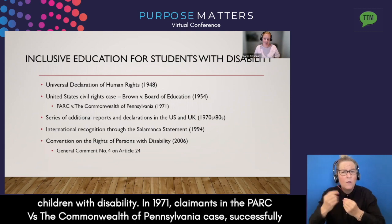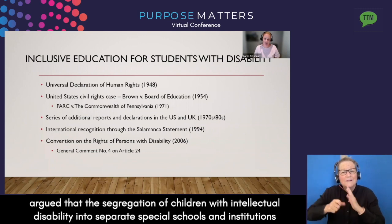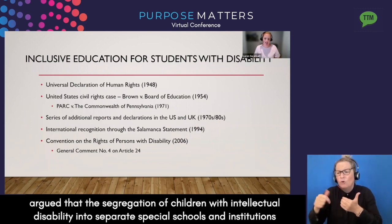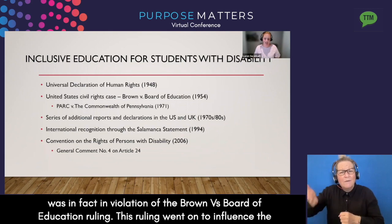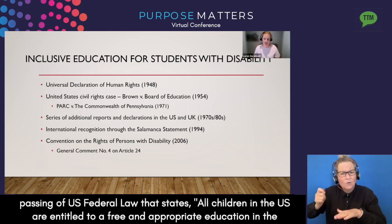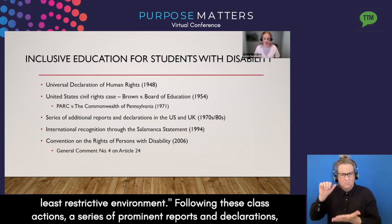In 1971, claimants in the PARC versus the Commonwealth of Pennsylvania case successfully argued that the segregation of children with intellectual disability into separate special schools and institutions was in fact in violation of the Brown versus Board of Education ruling. This ruling went on to influence the passing of US federal law that states all children in the US are entitled to a free and appropriate education in the least restrictive environment.